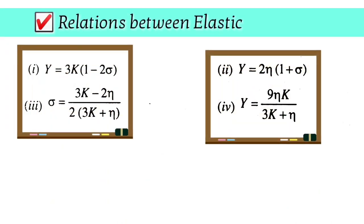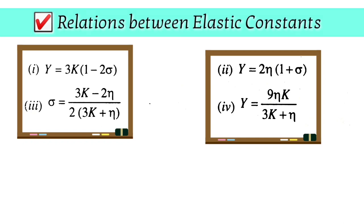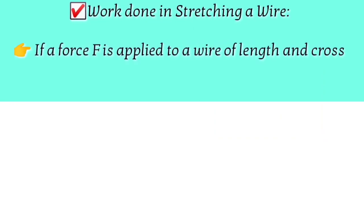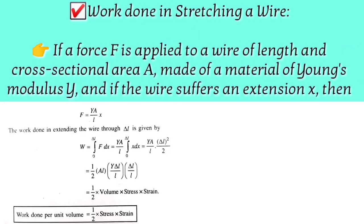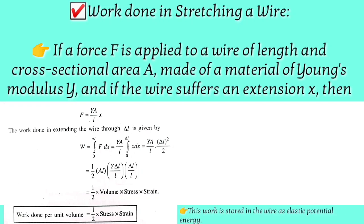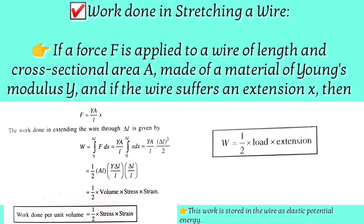There are important relations between bulk modulus, Young's modulus, and modulus of rigidity involving Poisson's ratio — remember these relations. Regarding work during stretching of a wire: to increase the length of an object, you must apply force and do work. Work done per unit volume equals one-half times stress times strain. This work is stored in the form of elastic potential energy. Work done equals one-half times load times extension, where load is external force and extension is change in length.